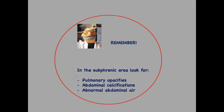For this part, remember: in the subphrenic area, look for pulmonary opacities — they are seen as faint opacities outlined by air, so you know they are in the lower lobes. Also look for abdominal calcifications, which can give you a clue of granulomas or cysts in the viscera. And also look for abnormal abdominal air — pneumoperitoneum, etc. The important thing is to look at the subphrenic area, because more often than not you may find some abnormality.